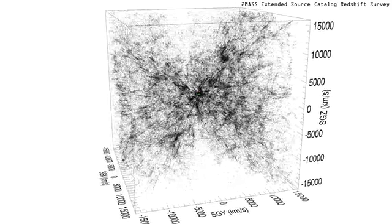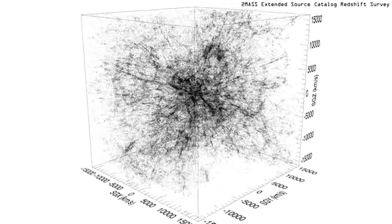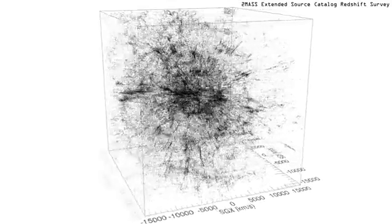Redshift space distortion causes clusters of galaxies to appear elongated towards the center of the cube.